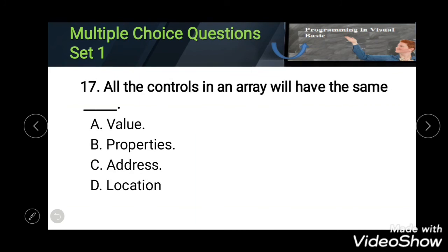Seventeenth: all the controls in an array will have the same blank. Options: Value, Properties, and Address or Location. The correct answer is Properties.